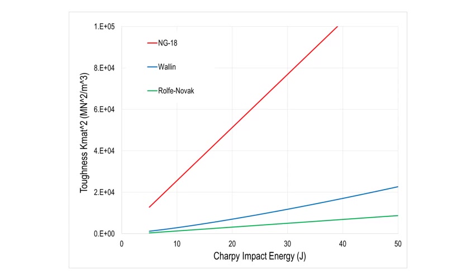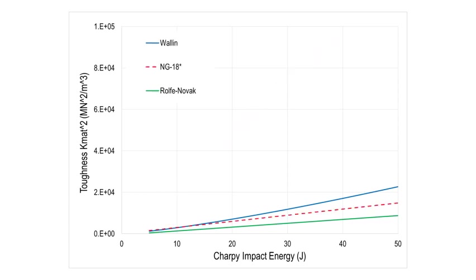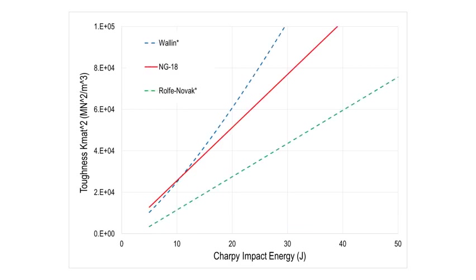Let's go back to our original plot with the NG18 Charpy over area, the Wallin-J, and the Rolf-Novak. Let's hypothetically say those NG18 Charpy over area correlations were done under plane stress conditions and we want to convert them to plane strain conditions, which would be theoretically more correct. We multiply those values by (1 − 2ν)², i.e., by one-ninth. And bang — the game of 'one of these things is not like the other' is no longer so easy to play. We can also flip it the other way: if we want the Wallin-J and Rolf-Novak correlations expressed under plane stress conditions, we divide by (1 − 2ν)², and everything lines up.